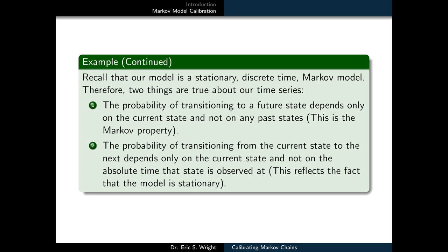Also, the probability of transitioning from the current state to the next depends only on the current state and not the absolute time that the state is observed at. This reflects the fact that the model is stationary.